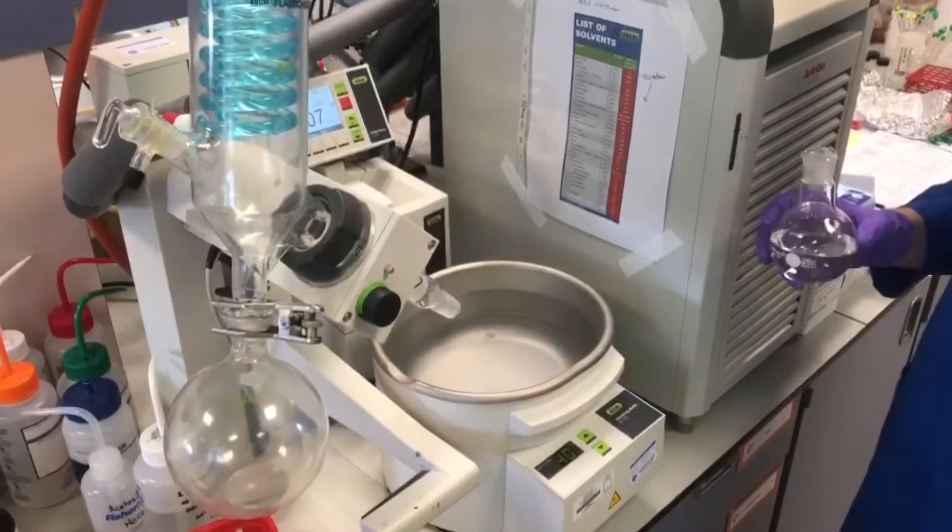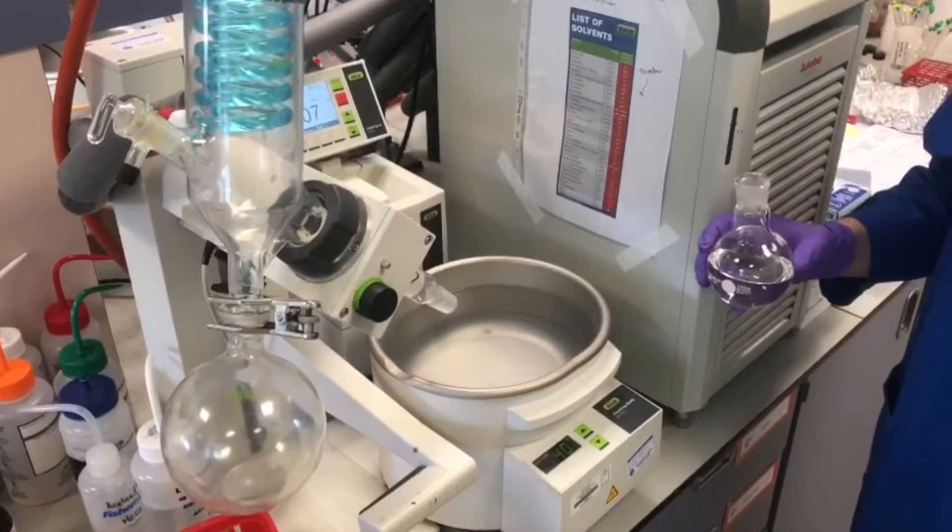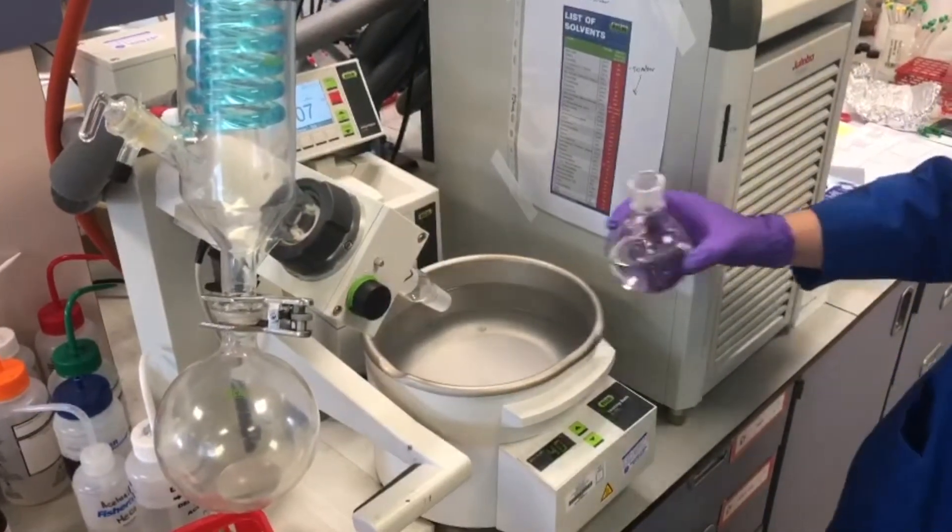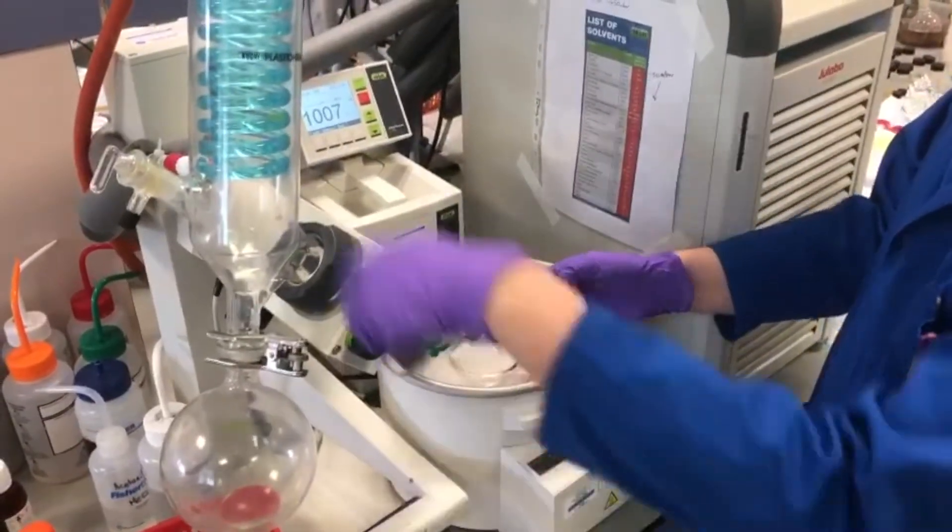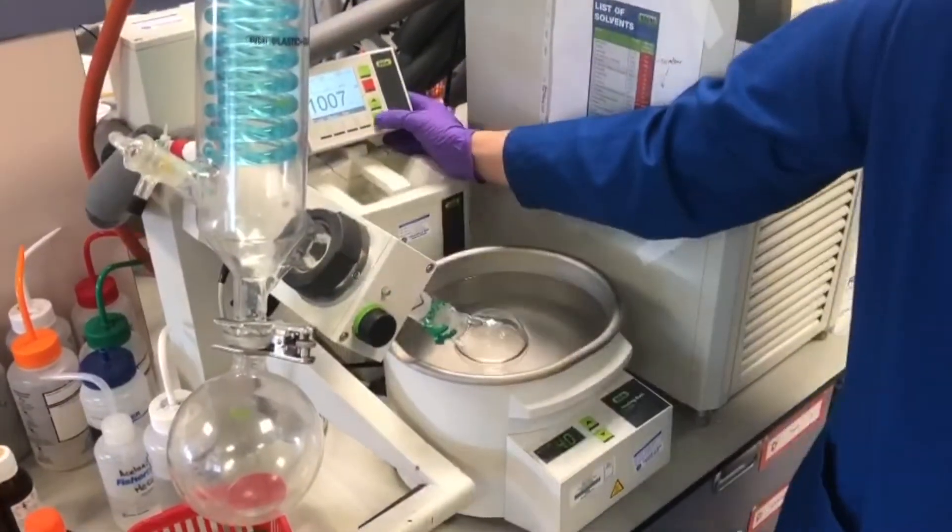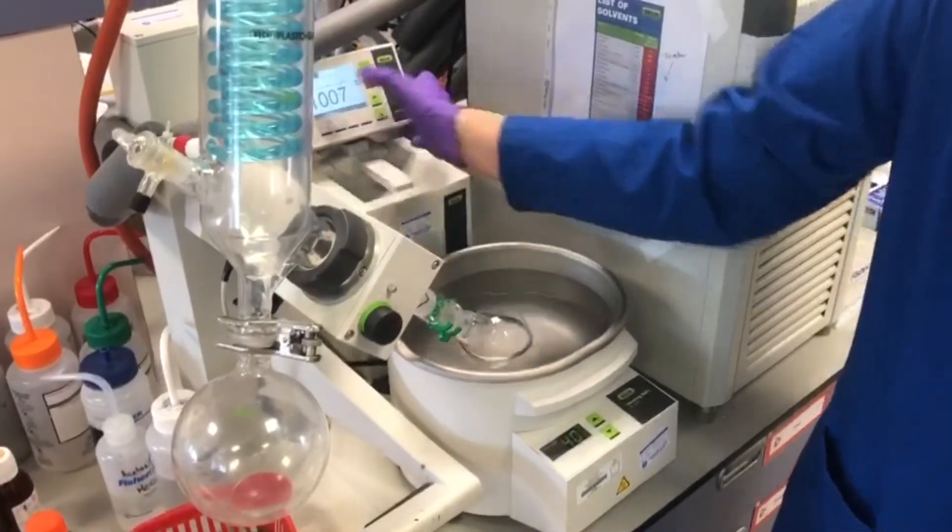Removal of formic acid is comparable to the removal of water, as they have similar boiling points. This will take a while and will need to be under full vacuum. Clip it on, throw it into the water bath. In this case we just set a low pressure, and we'll set it to continuous.